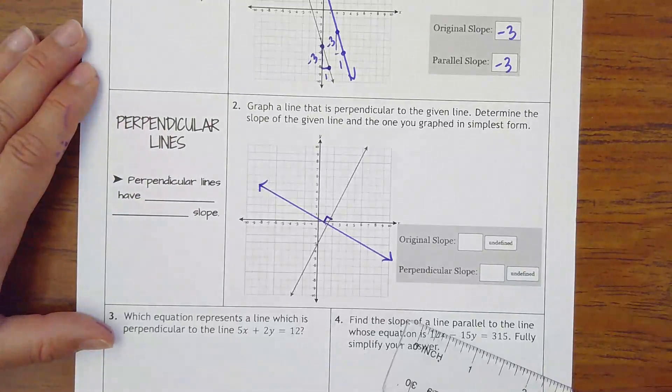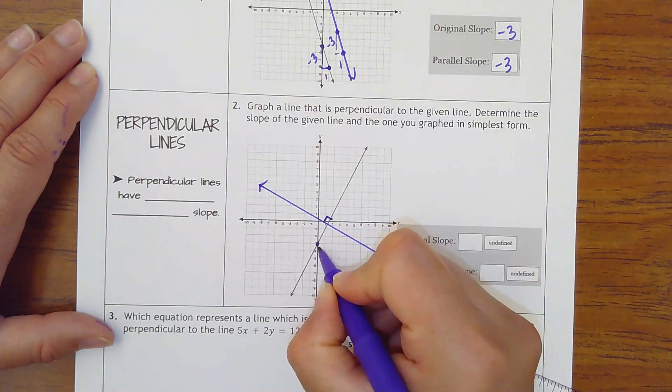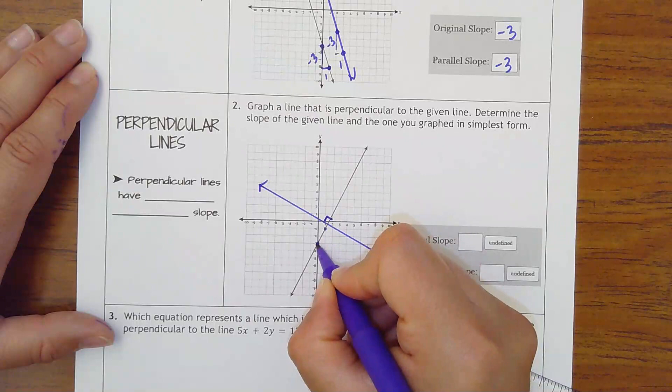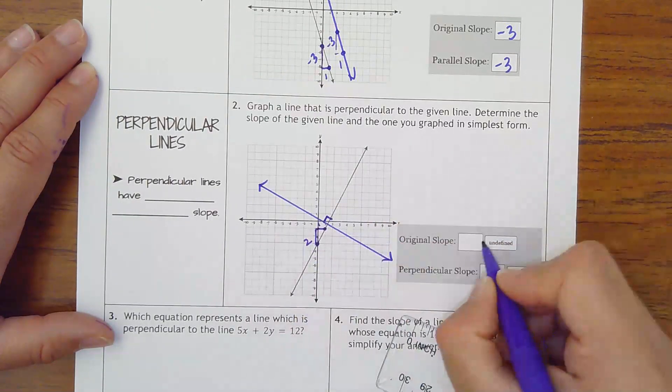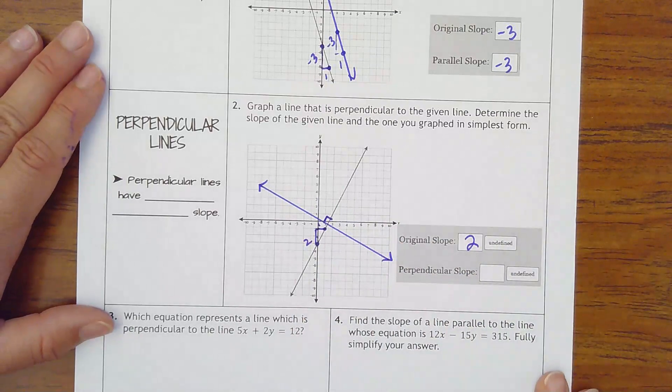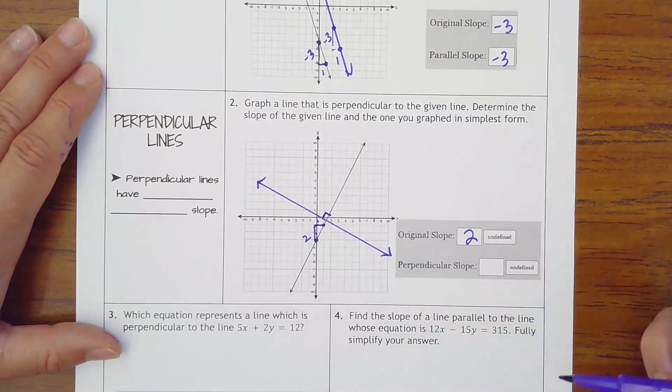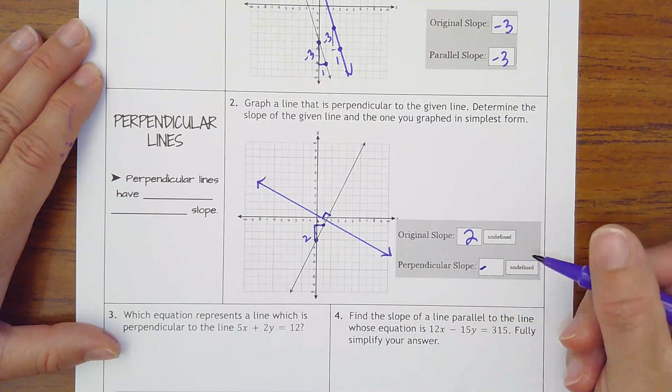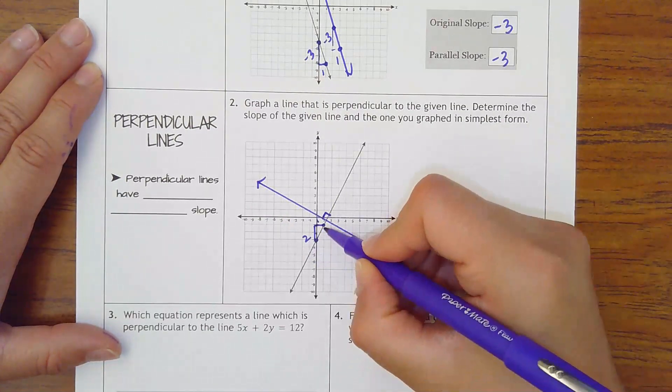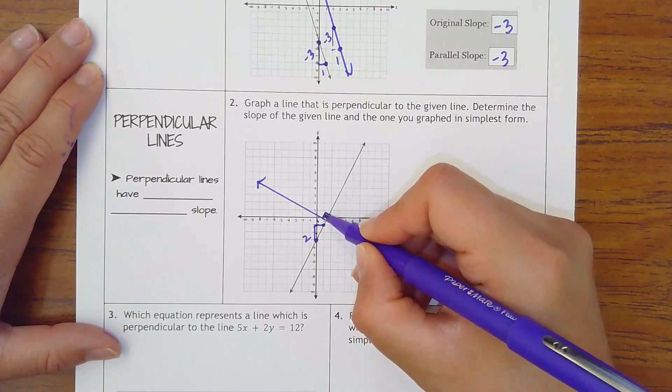So the original slope, I'm going to find the y-intercept. Right here. It goes up 1, 2, over 1. Up 2, over 1. So slope is 2. For my second line, notice how it has to be negative. And then what happens is this line going up was steeper. Now it's not as steep.